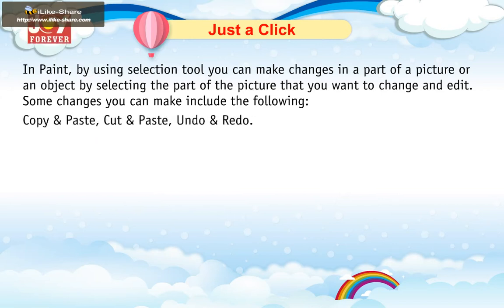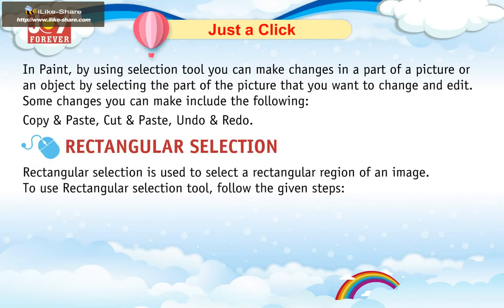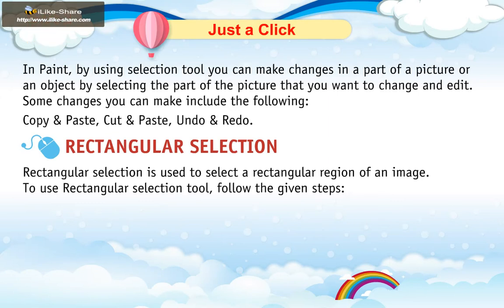Copy and Paste, Cut and Paste, Undo and Redo. Rectangular Selection is used to select a rectangular region of an image. To use the Rectangular Selection tool, follow the given steps.